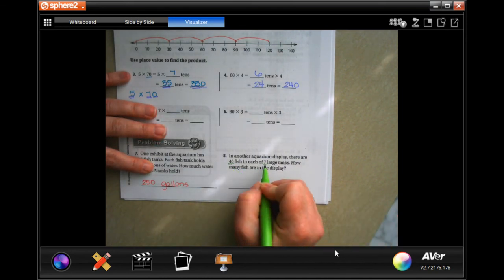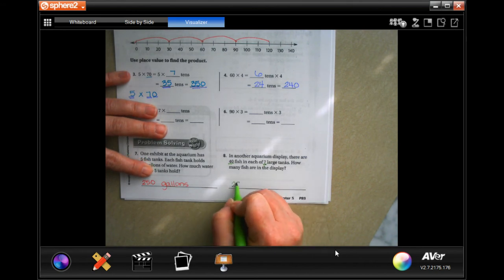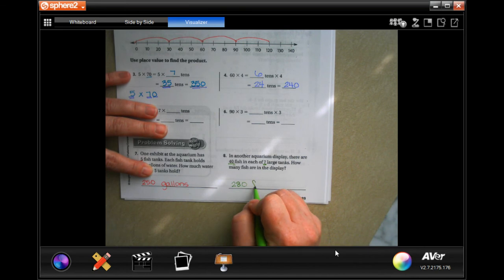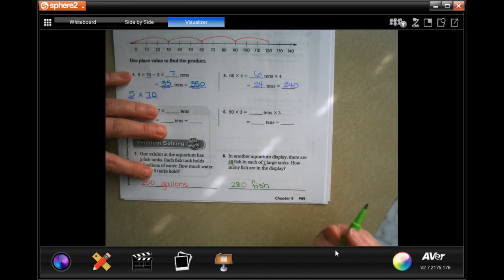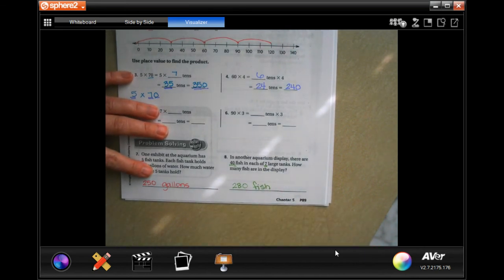Well, 4 times 7 is 28, and then we're going to tack that 0 on. So 280 fish.